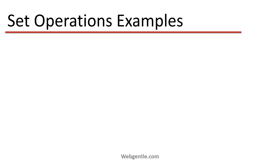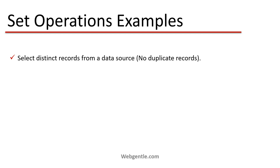Let's understand the set operations examples. Suppose I have a data source and from that data source I need to fetch only distinct values. For example, I have a list of employees and all the employees have their own salary. I need to fetch only distinct salaries from that table — there may be duplicate salaries for two or more employees, but I need only distinct ones. In that scenario, a set operation is used.